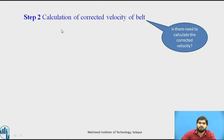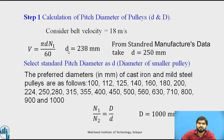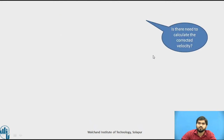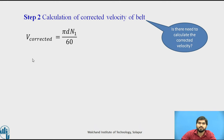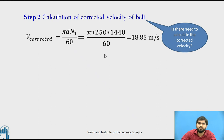Step 2: Calculation of corrected velocity of the belt. We need to calculate the corrected velocity because we selected d = 250 mm from the data book instead of the computed 238 mm. Using the formula with small d and n1, we calculate V corrected and get 18.85 meter per second.